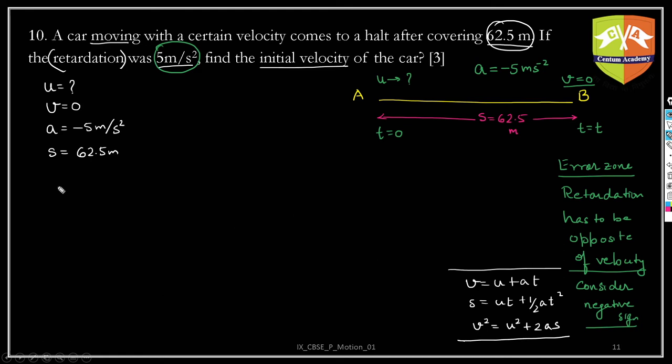Now this is the equation of our choice because there is no mention of time over there. V square is 0. What is u square? This is what we have to find out. Plus 2 into a minus 5 into s which is 62.5. So u square is equal to 10 and 625. So now clearly u is root of 625.